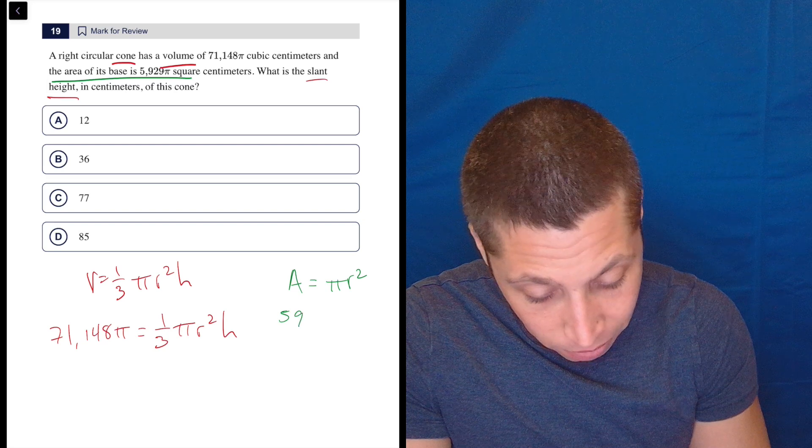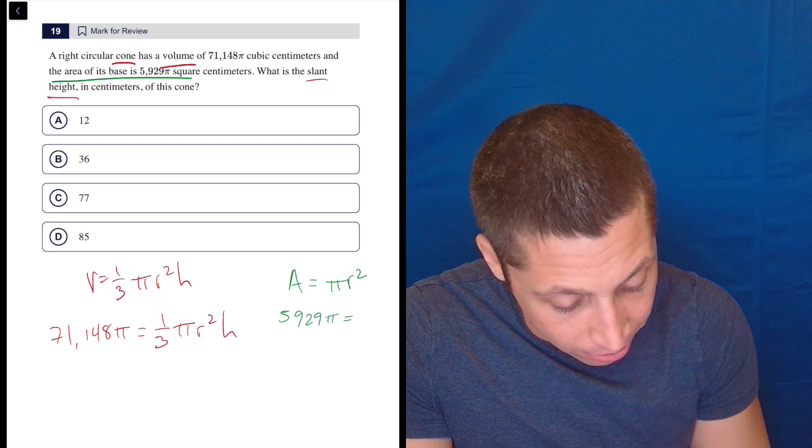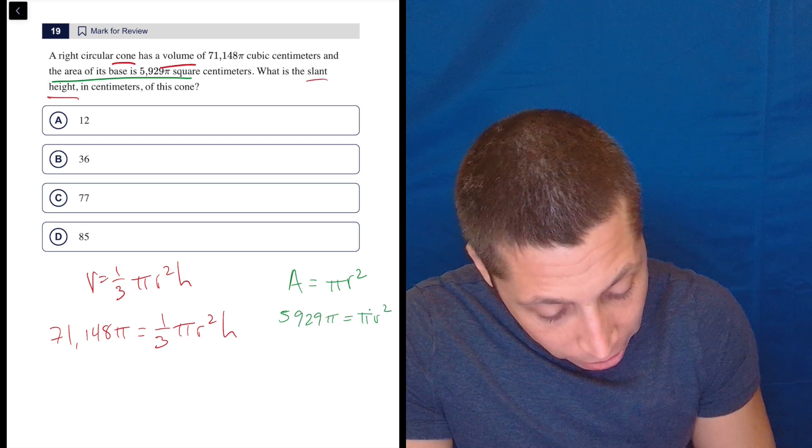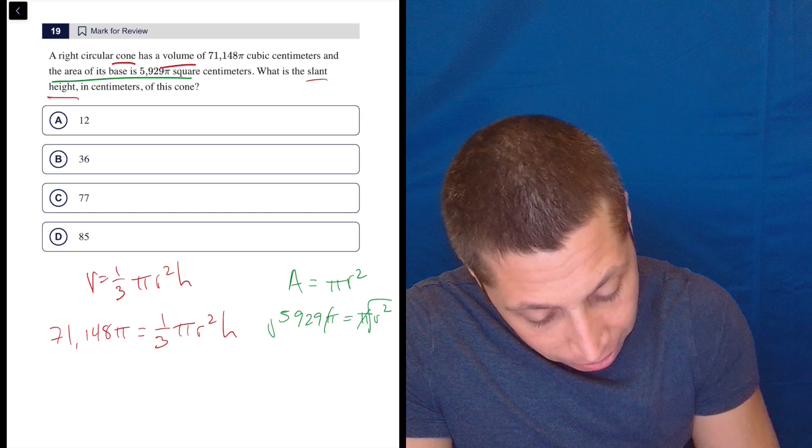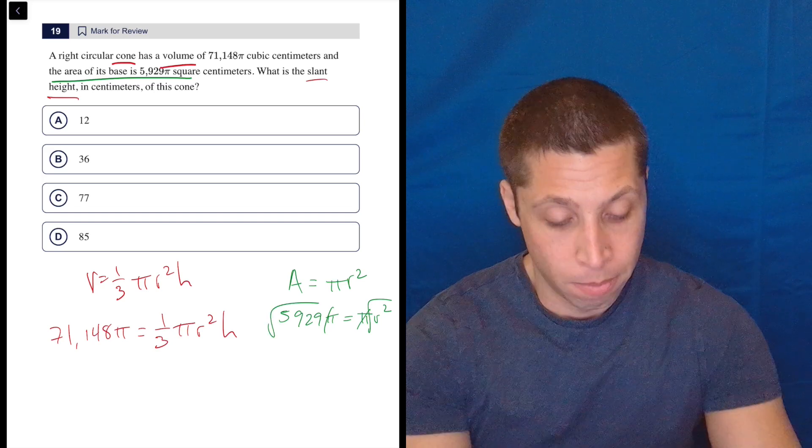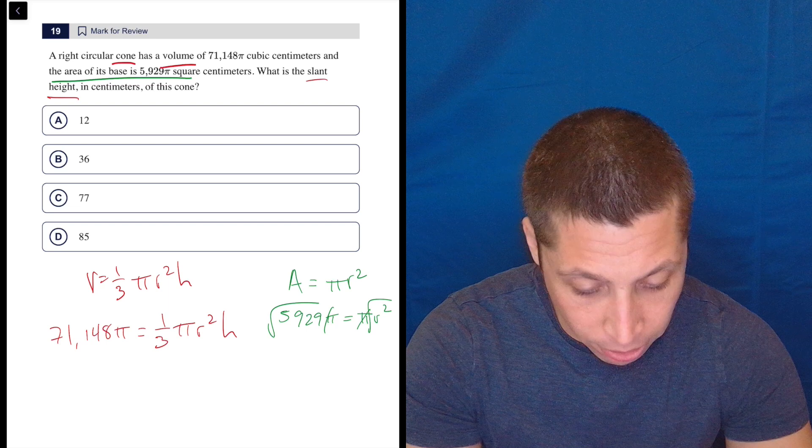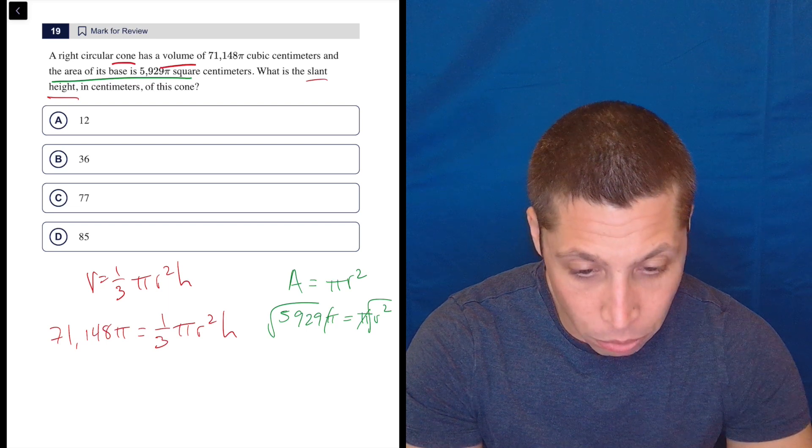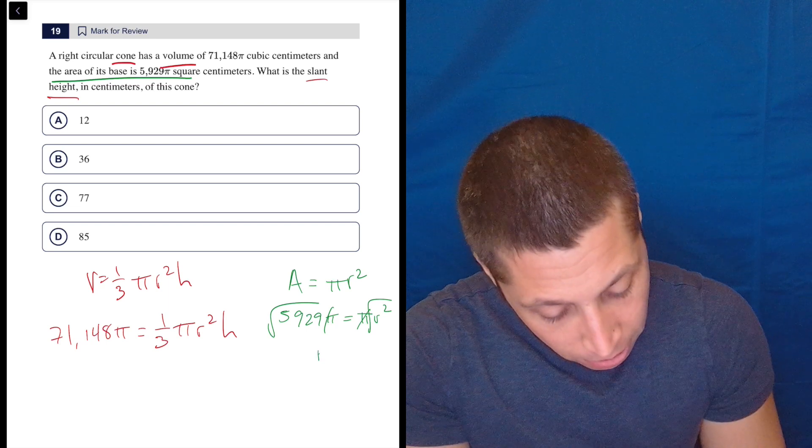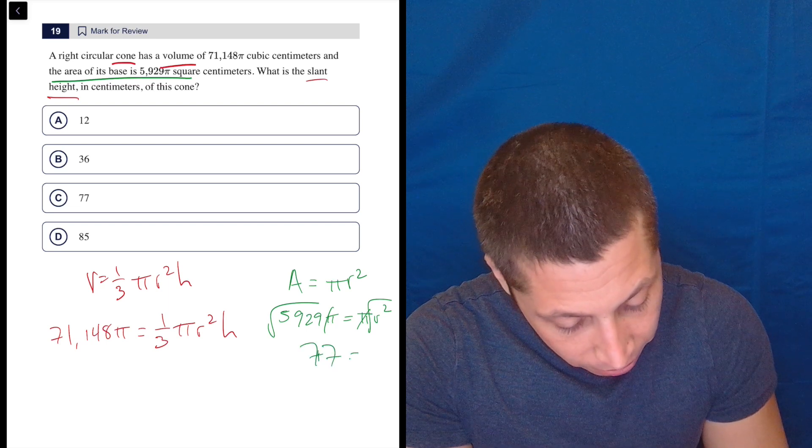Because the area of the base is pi r squared, also in the reference chart because it's a circle. That's what a cone's base is, it's a circle. So we can just do another plug points in equations. 5,929 pi is equal to pi r squared. So those pi's go and we can take the square root of both. I'm going to do that in my regular old calculator. So 5,929 square root is 77. So 77 is my radius.